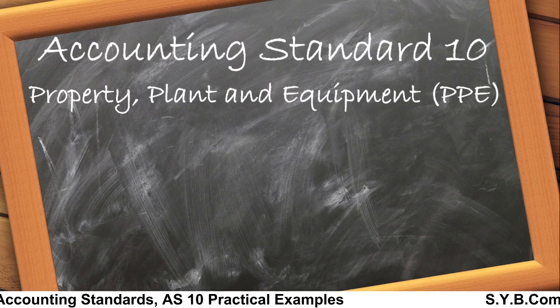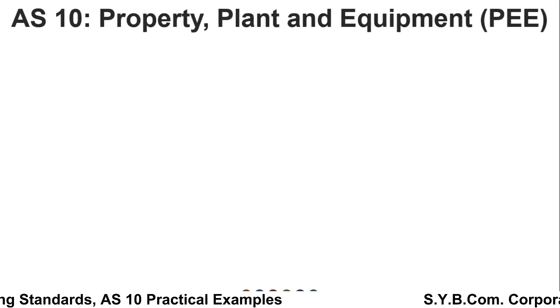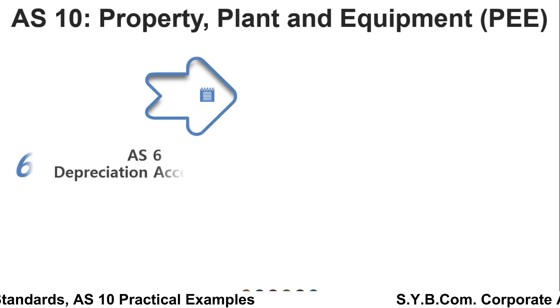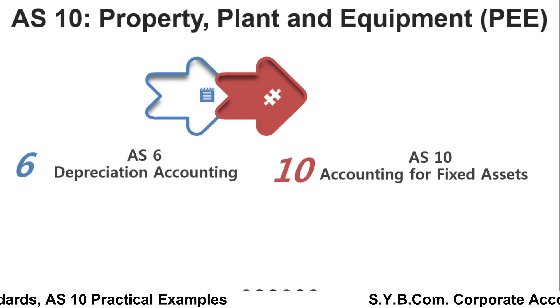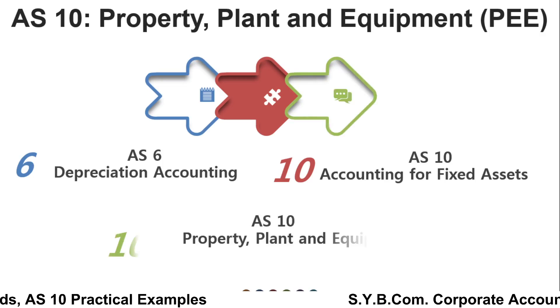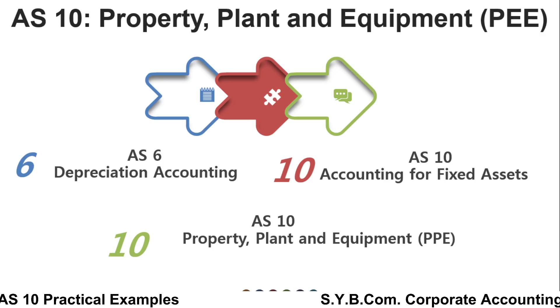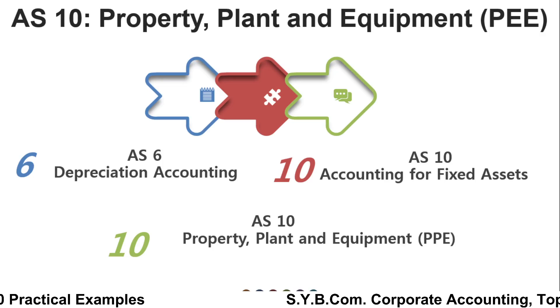So, what is AS10? AS10 is Property, Plant and Equipment. Initially AS6 was there, after that AS6 and AS10 were combined. After the combination, it became AS10 as Property, Plant and Equipment — which is a combination of AS6, that is Depreciation Accounting, and AS10, Accounting for Fixed Assets.